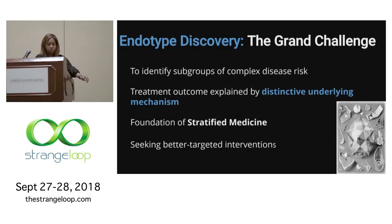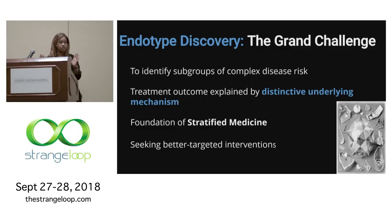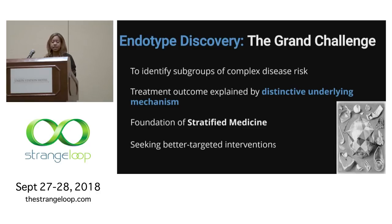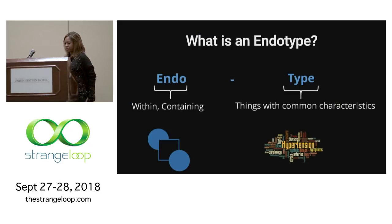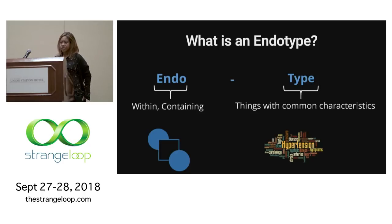The focus of this talk is on endotype discovery. This is the grand challenge: to try to understand subgroups of complex diseases such that even though we have a single diagnosis, maybe there are multiple syndromes within that common diagnosis. This can help us understand what is the underlying mechanism that drives those differences in response to drugs, even though we see the same symptoms on the surface. This is the foundation for stratified medicine — seeking better, more targeted interventions by understanding the heterogeneity in disease symptoms. Endotype comes from the Greek 'endo', meaning containing, and 'type', meaning things with common characteristics. Disease heterogeneity manifests in how symptoms are expressed over time and in heterogeneity in drug response.